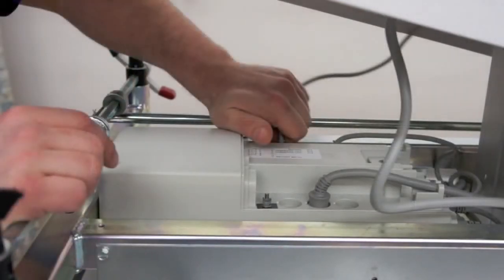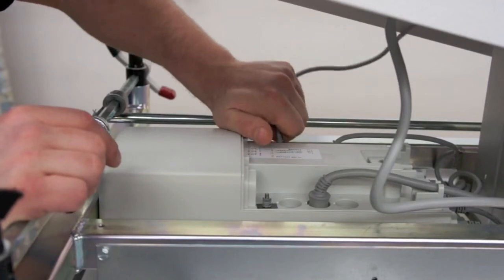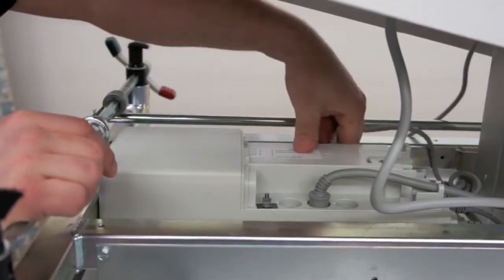Before removing wires, be sure to label each one. This will make placement easier. Remove the wires and place off to the side.